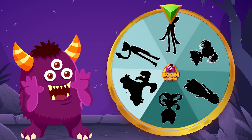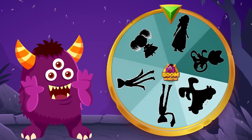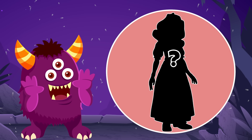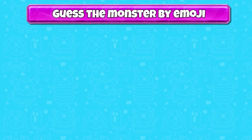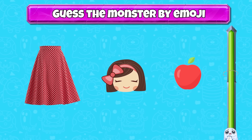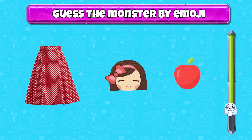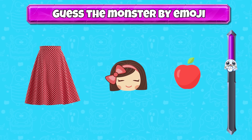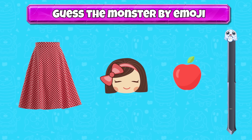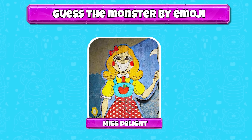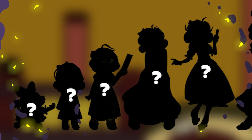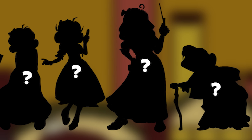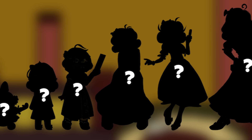Second character. Can you guess which character this is? Correct — it's Miss Delight! These will be the stages of development in the character's life. Let's learn about this interesting life.